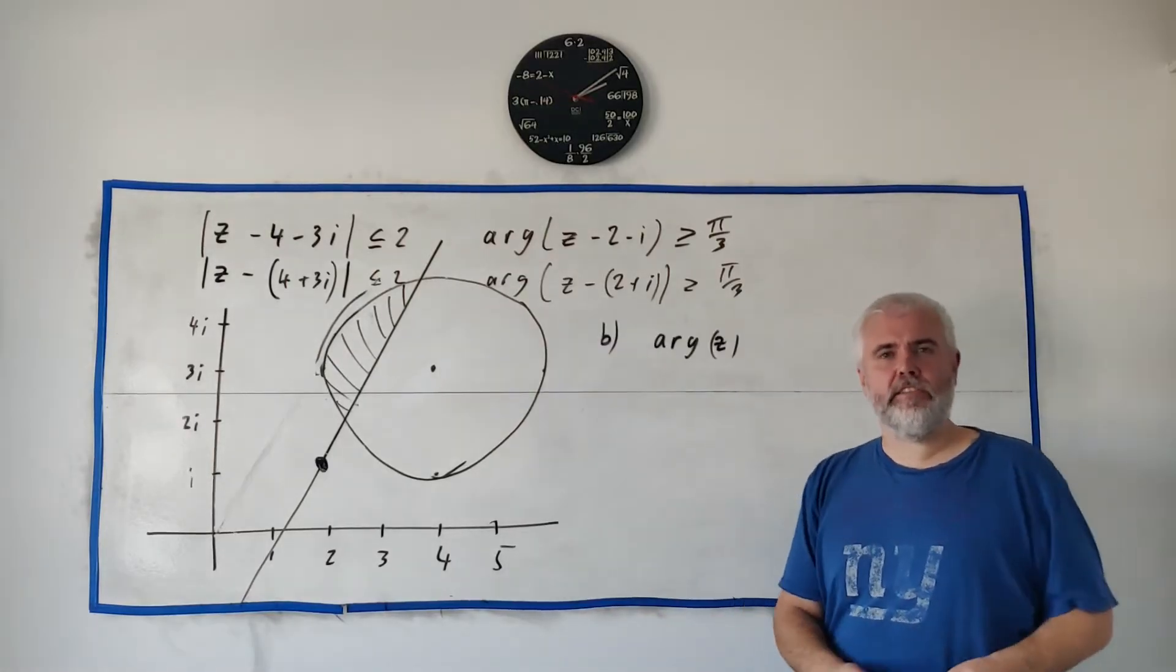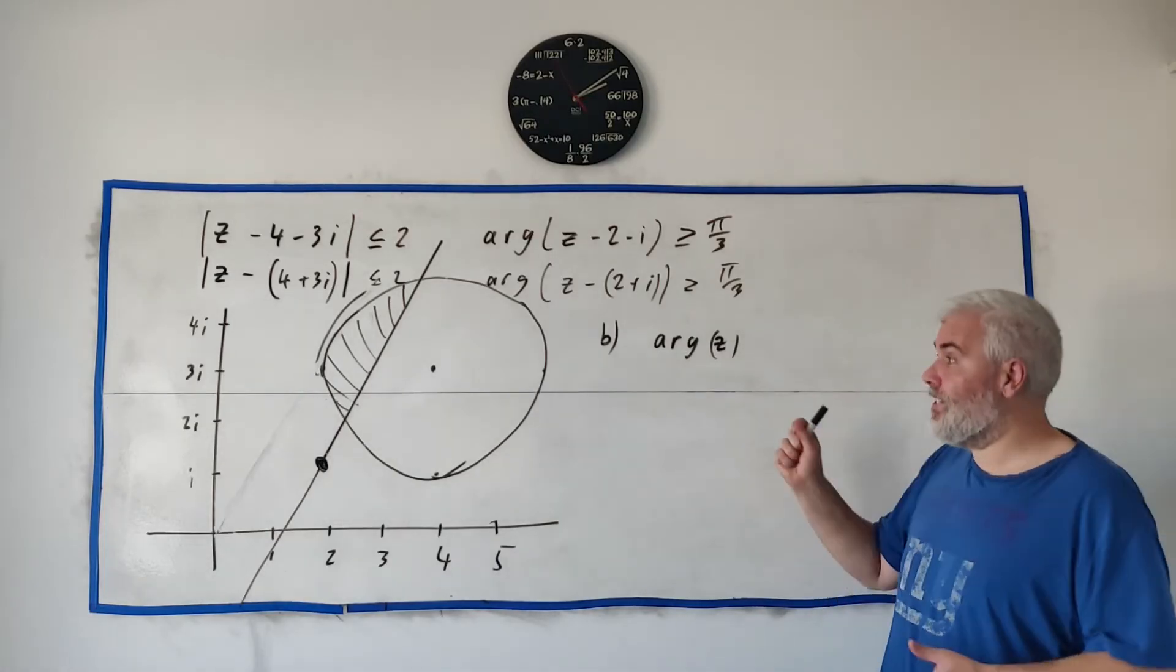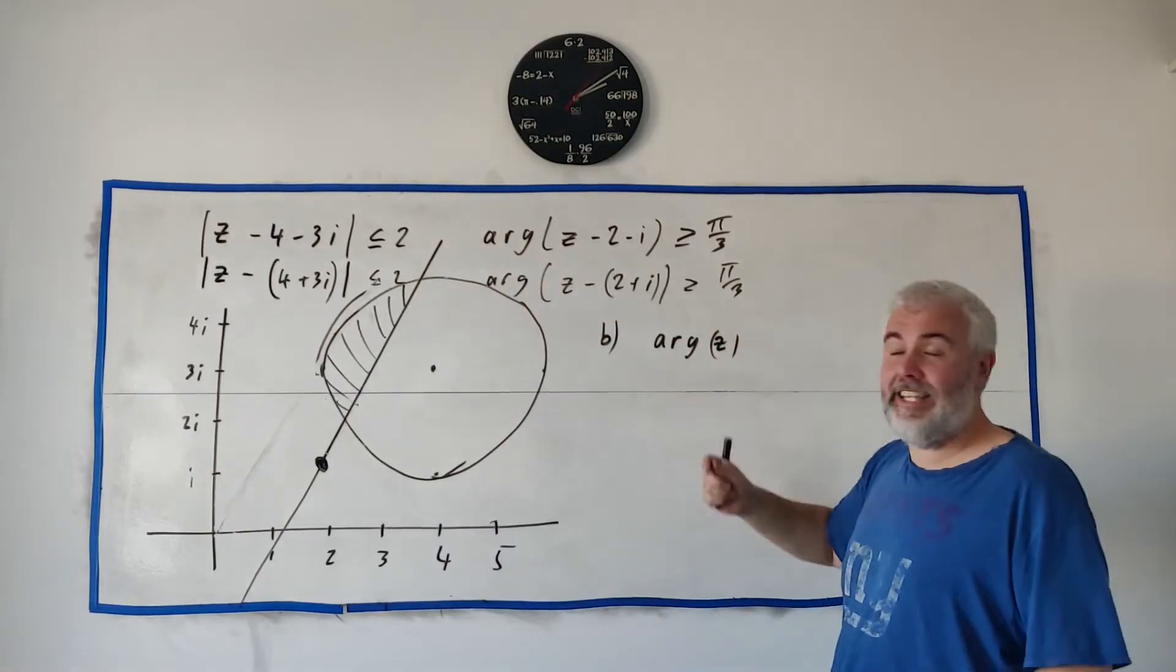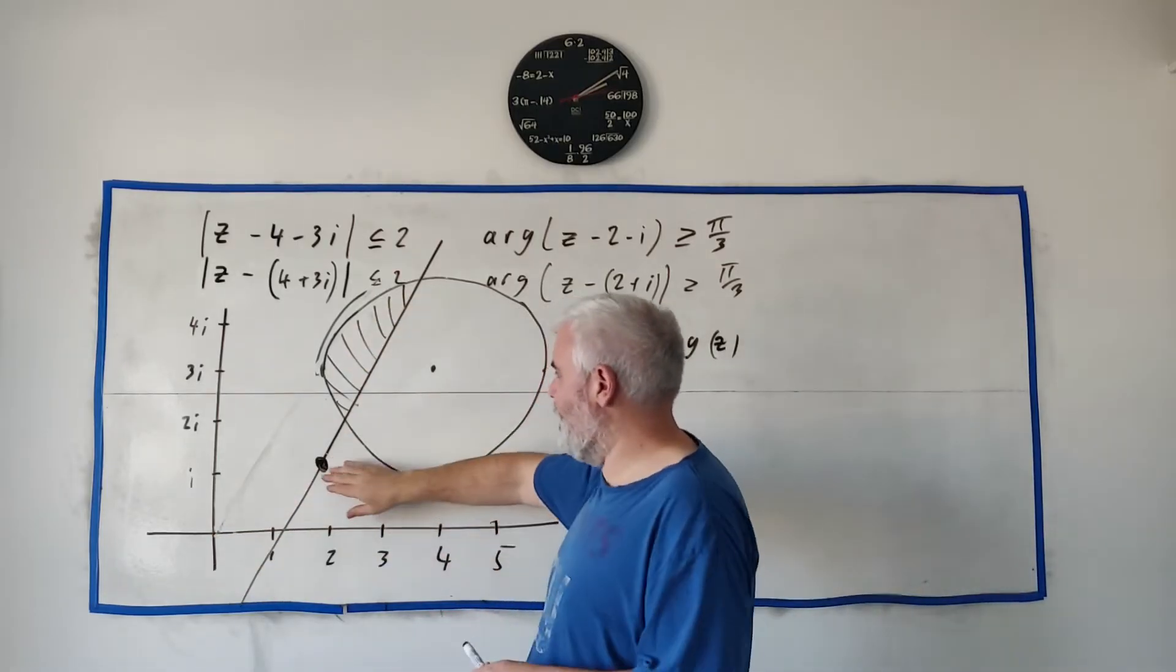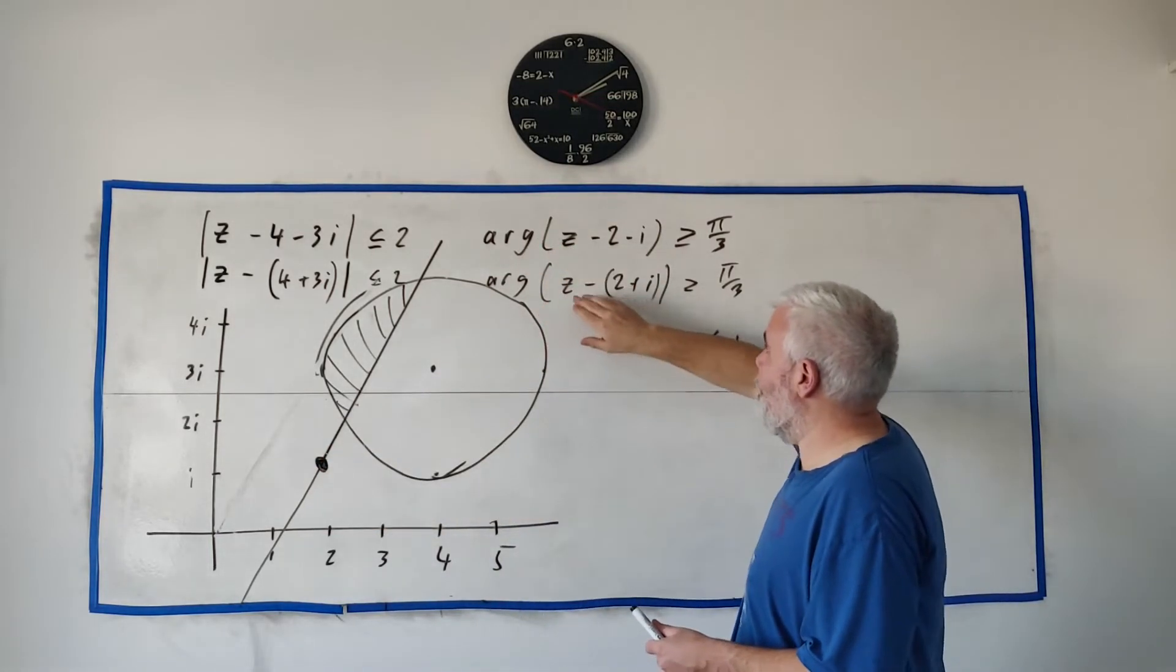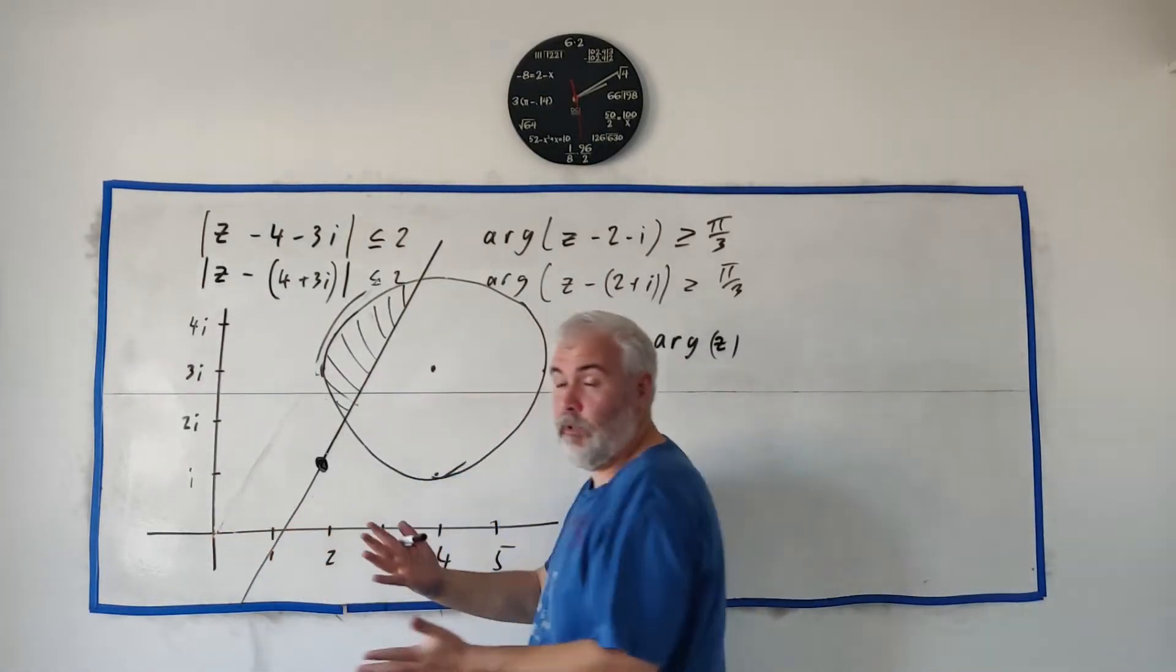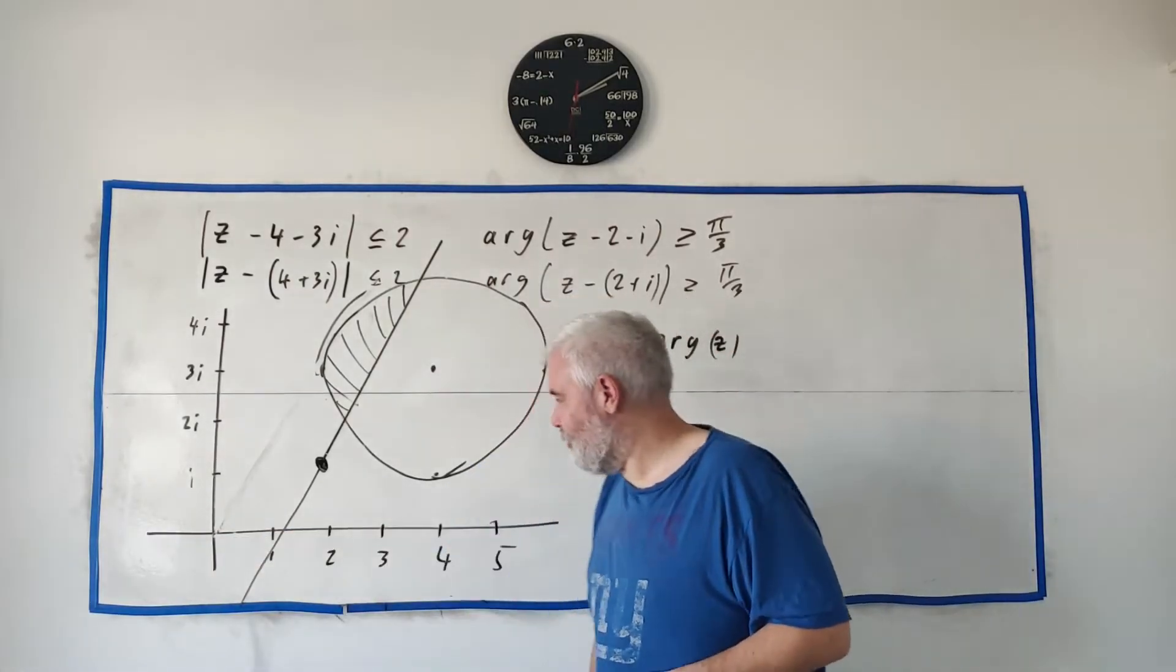In part B they ask us to find the greatest value for the argument of Z. Now let's remind ourselves what Z is. Z is every single point in this shaded region. Any point in there is a valid answer to part A for Z. And the argument of Z is the angle between any point in here and zero zero. Don't be confused by this point here. We got the argument from that in the first part only because it was Z was, we took it away from Z. In this case there's nothing taken away from Z. Or you could think of zero zero being taken away from Z. And that's why we use the zero zero point. Sorry that's coordinate geometry I'm talking. A zero plus zero i point in the argument.